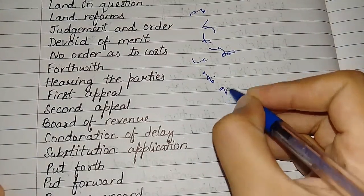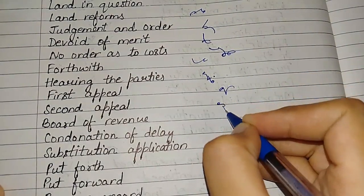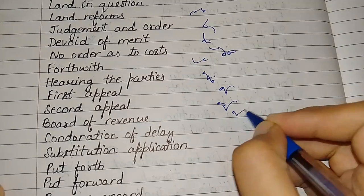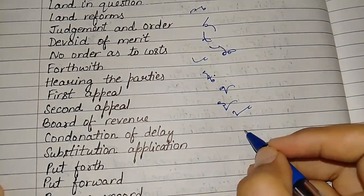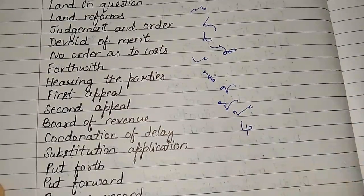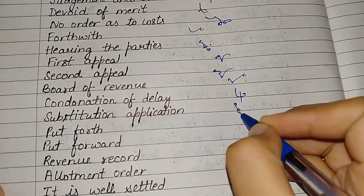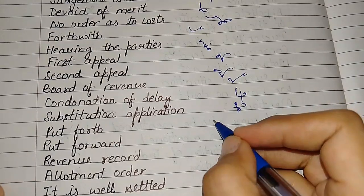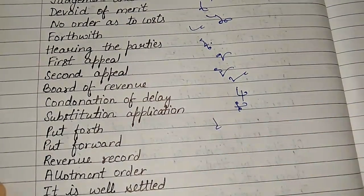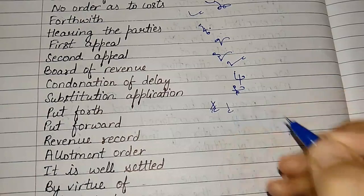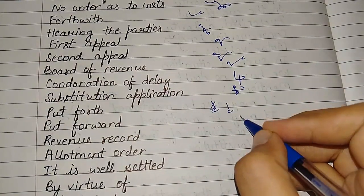First appeal, second appeal, Board of Revenue, condonation of delay, substitution application. Put forward, put forth.